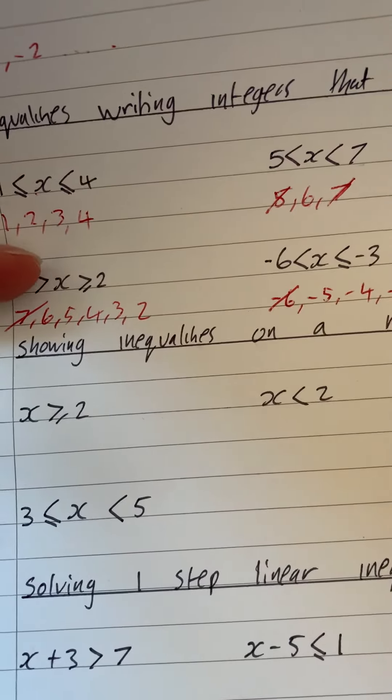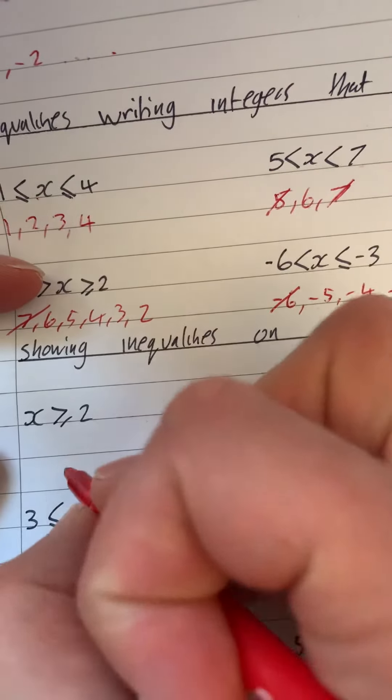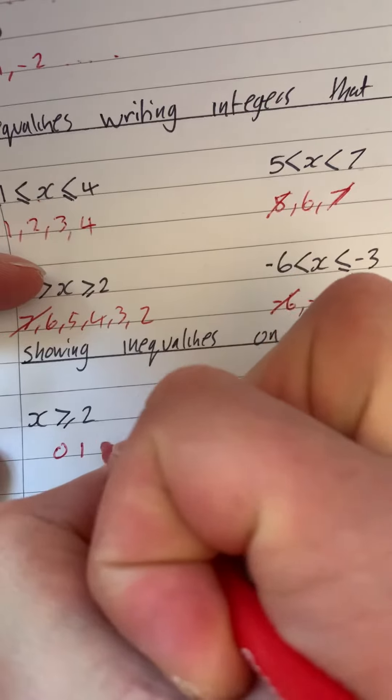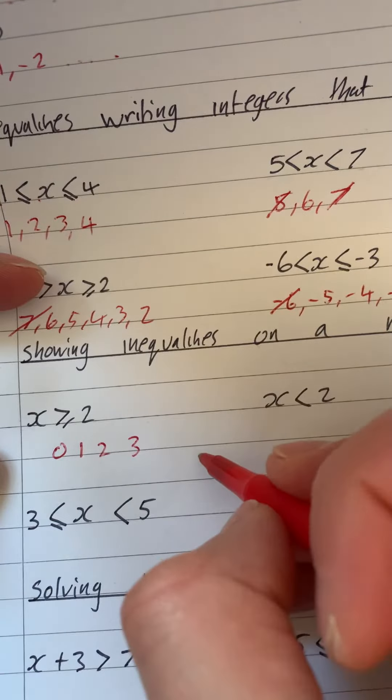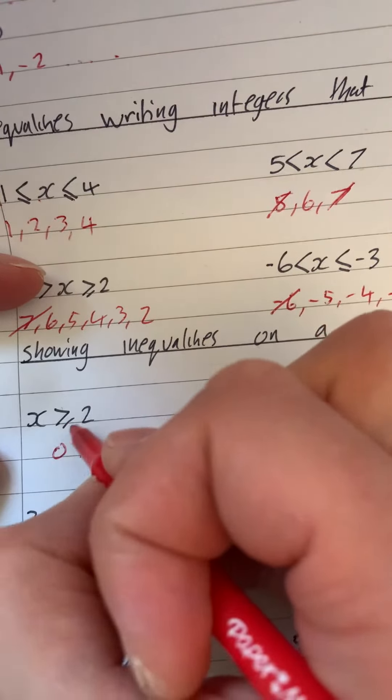Okay, so showing an inequality on a number line. What we can do is just write a little number line, so zero, one, two, three. This is normally written out for you.